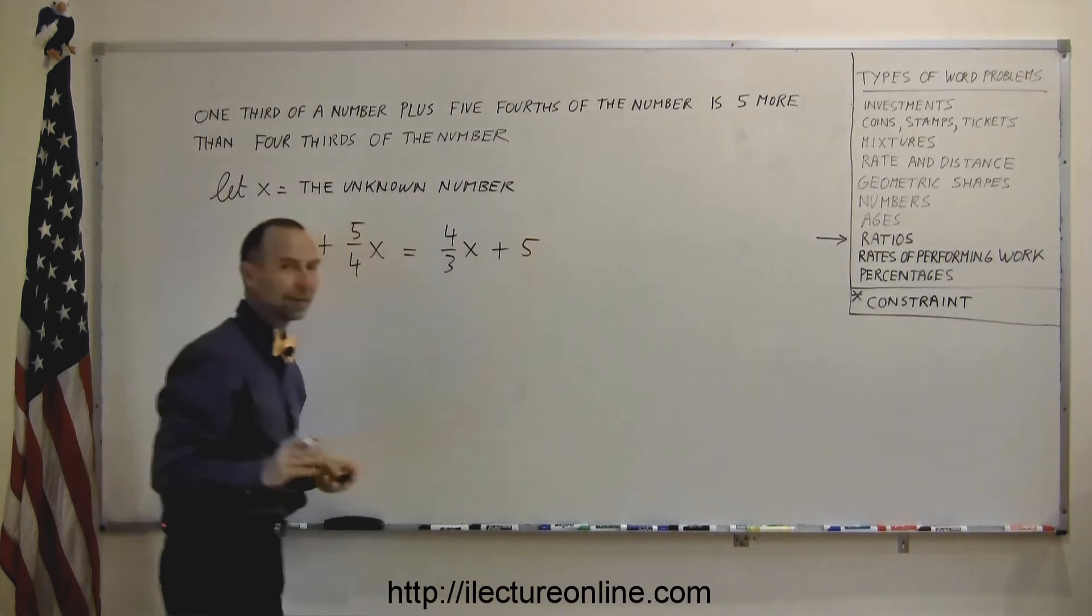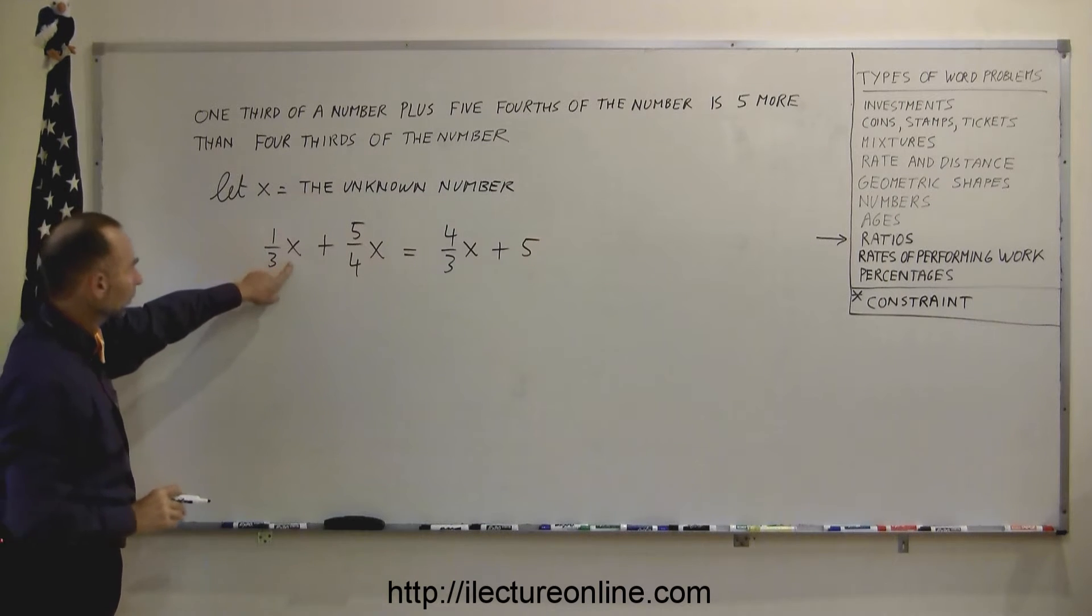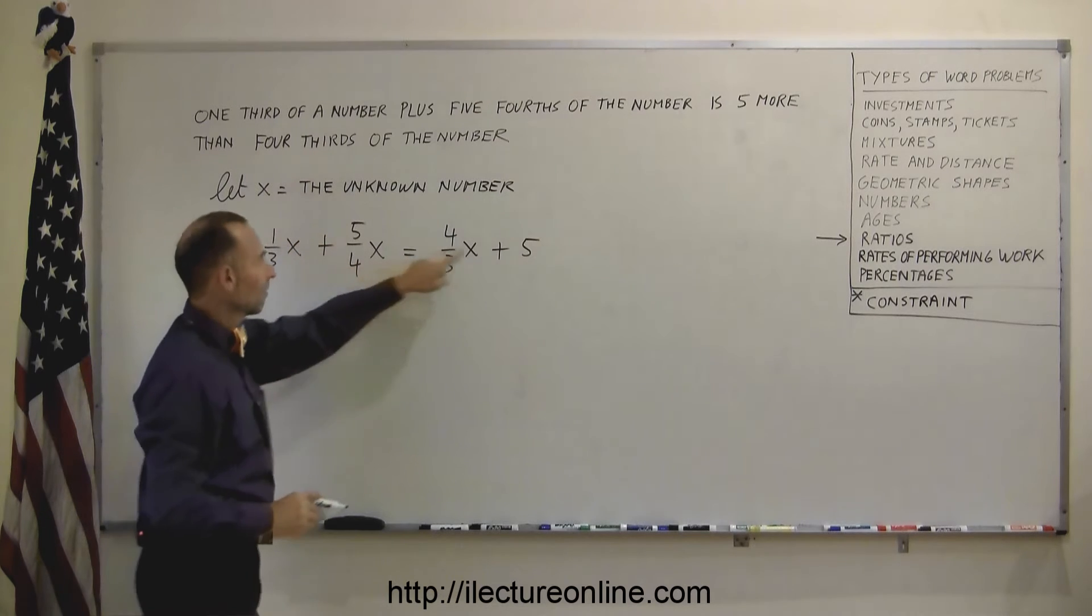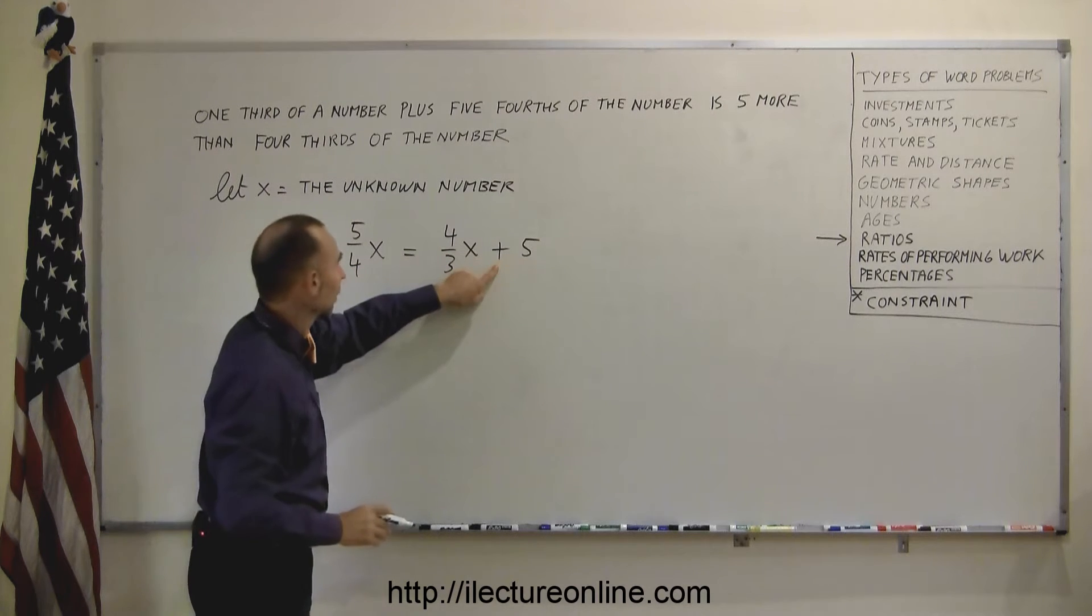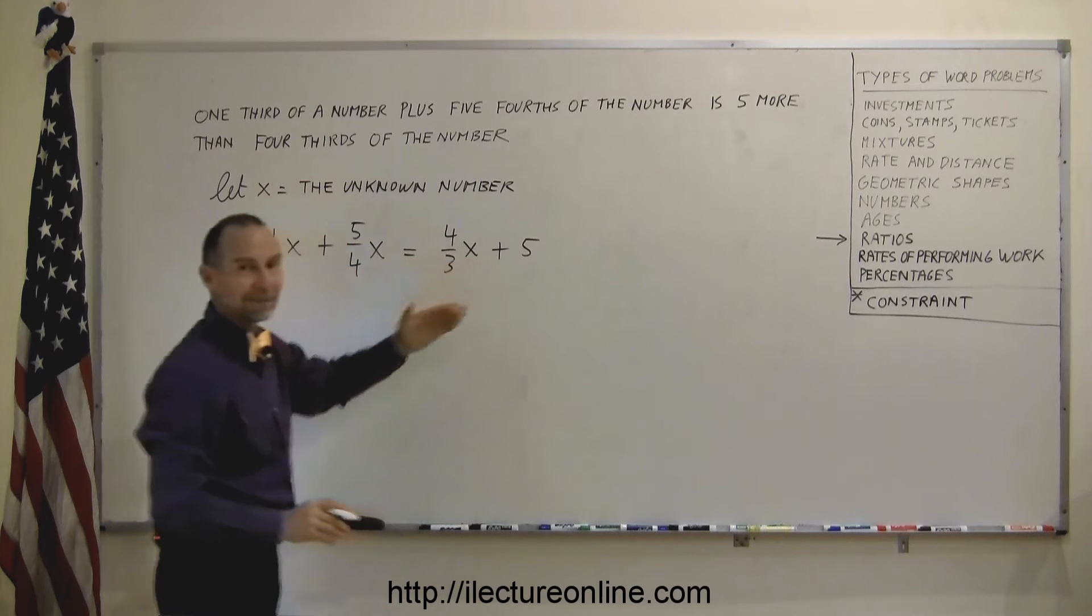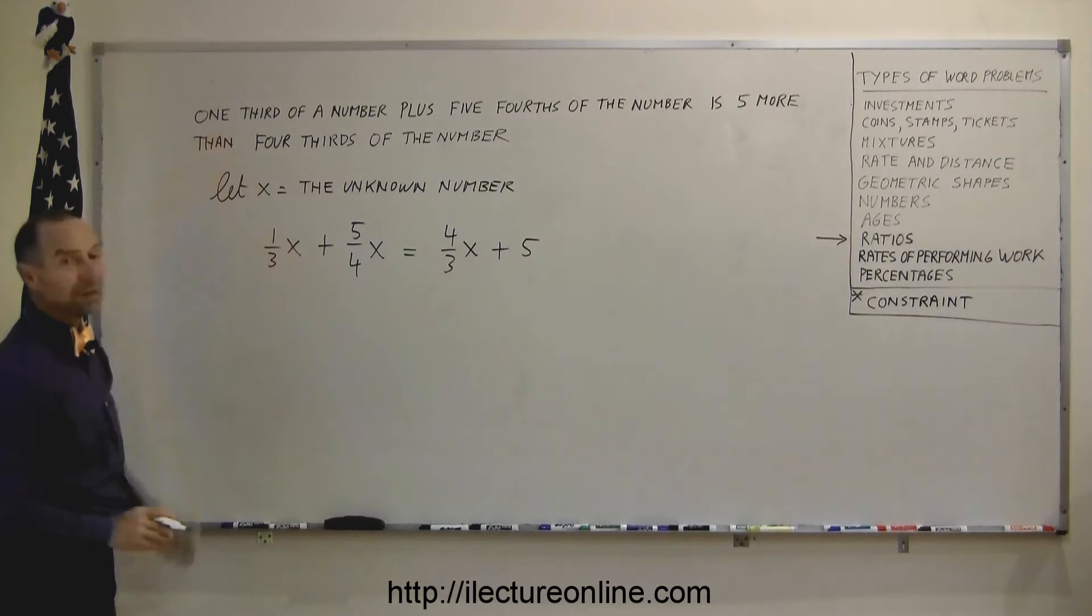Now, let's read it slightly different. One-third of the number, plus five-fourths of the number, is five more than four-thirds of the number. There you go. That's the algebraic way to write that English sentence.